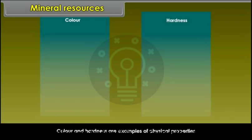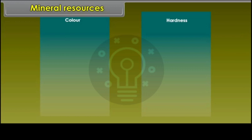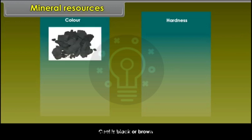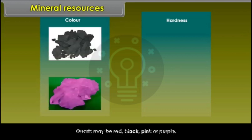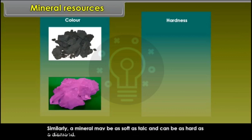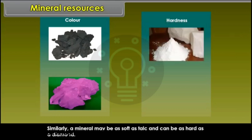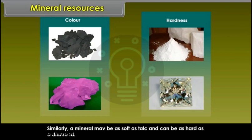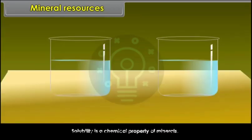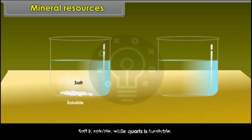Colour and hardness are examples of physical properties. For example, coal is black or brown; quartz may be red, black, pink or purple. A mineral may be as soft as talc and can be as hard as a diamond. Solubility is a chemical property of minerals — for example, salt is soluble while quartz is insoluble.